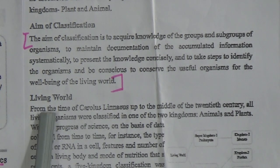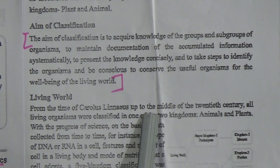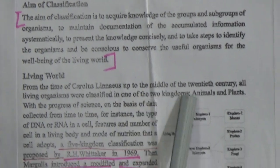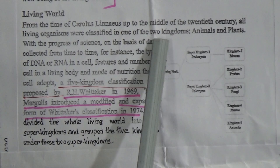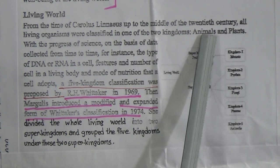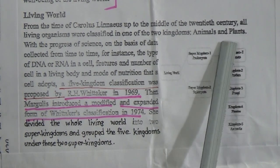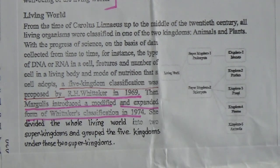From the time of Carolus Linnaeus up to the middle of the 20th century, all living organisms were classified in one or two kingdoms — Animalia and Plantae. The whole living kingdom was first divided into these two parts.